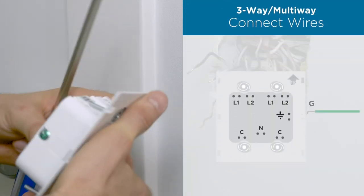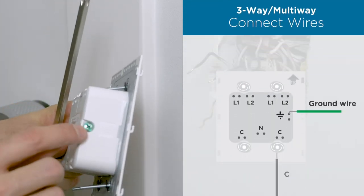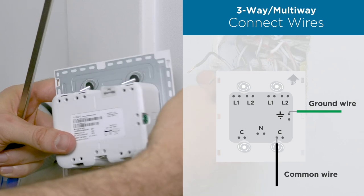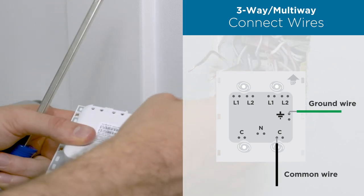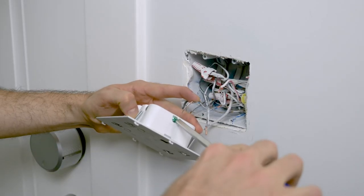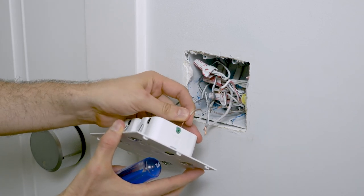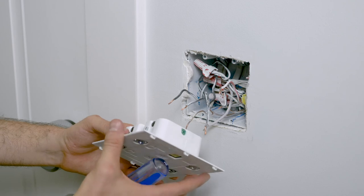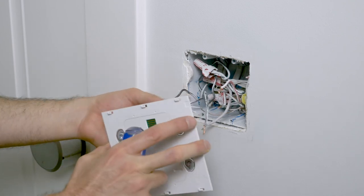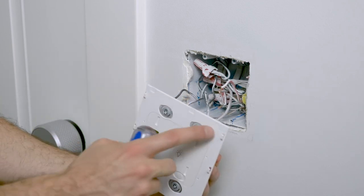We'll begin with the ground terminal, the green terminal with the green screw. Find your ground wire. This is usually green or copper colored. Make sure to insert the wire and screw it in until it's tight. Give it a good tug. Be sure that you install your device facing upright. A good way to tell is to see that the arrow icon is facing up.